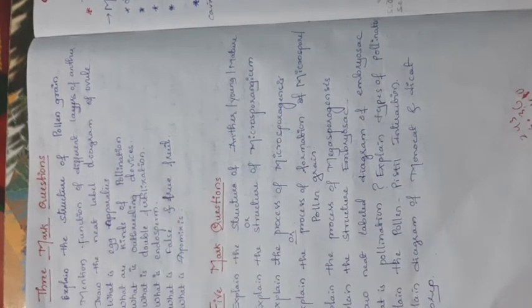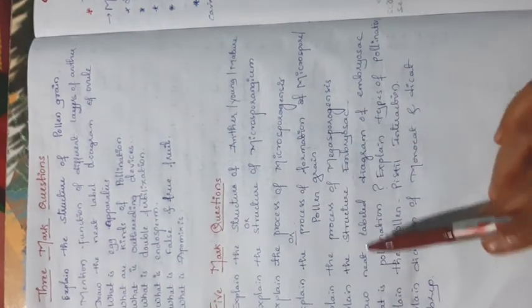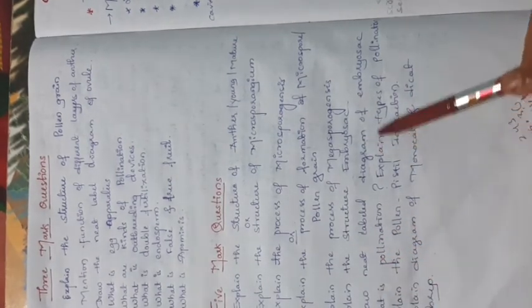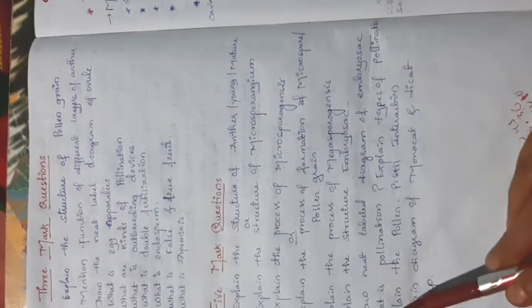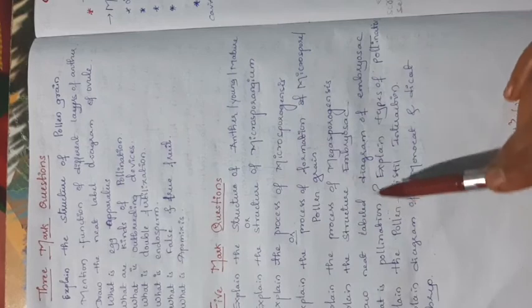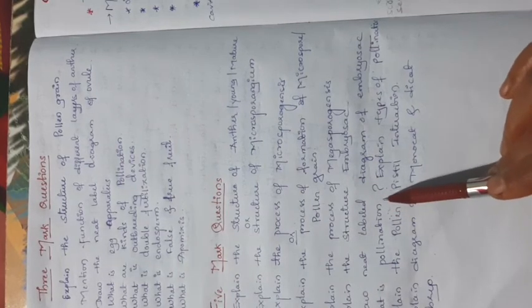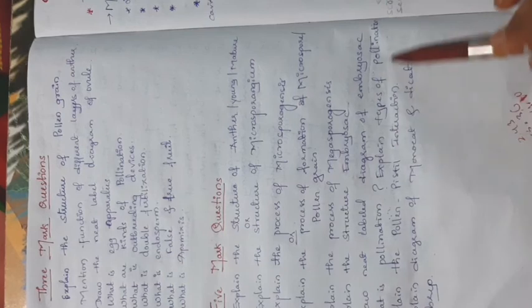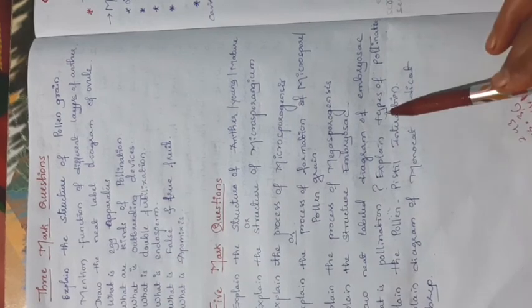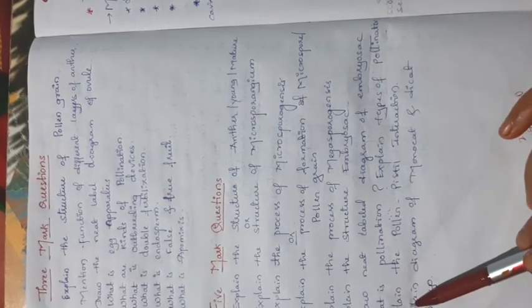Next: explain the structure of the embryo sac. At the chalazal end, three antipodal cells are present. At the micropylar end, three cells are present: one egg cell and two synergids with filiform apparatus. In the central cell there are two polar nuclei. For this you should draw a neat labelled diagram of the embryo sac.